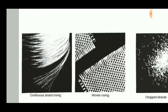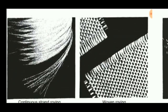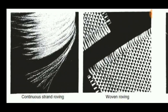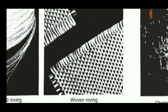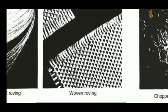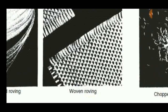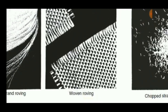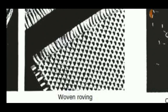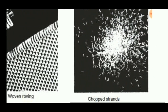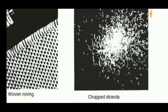These are all the fiber forms. The first picture shows the continuous strand roving — that is a long continuous fiber. Then there is woven fiber, woven in multi-directional directions — woven roving will be available in the form of mats. Another form is the fiber preform in the form of chopped strands.